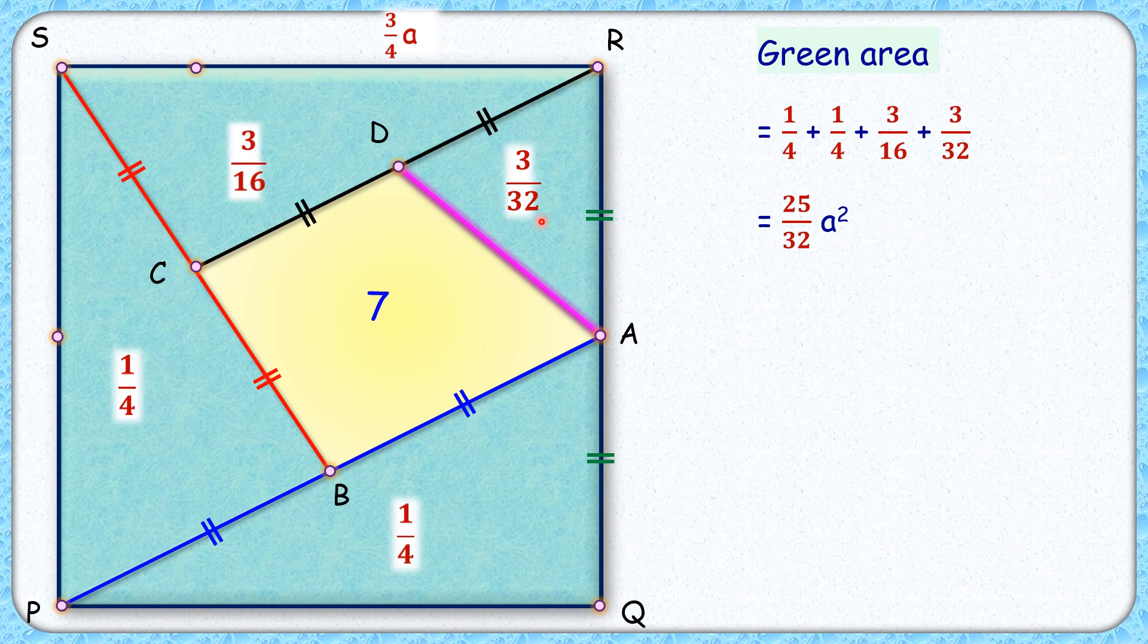So what is the fractional part of the yellow square? Yellow area will be 1 minus fractional part of green area. So yellow is 7 by 32nd part of the square.